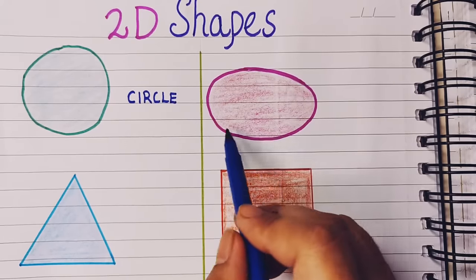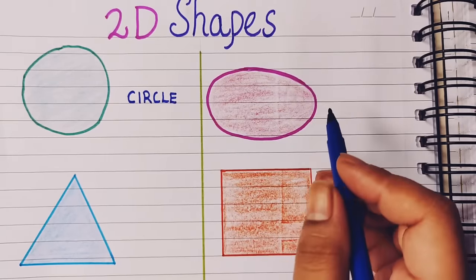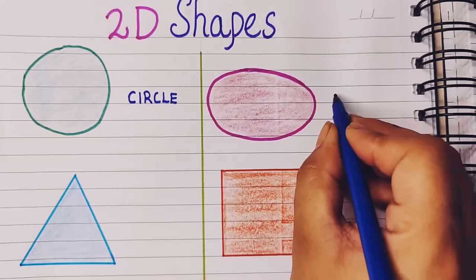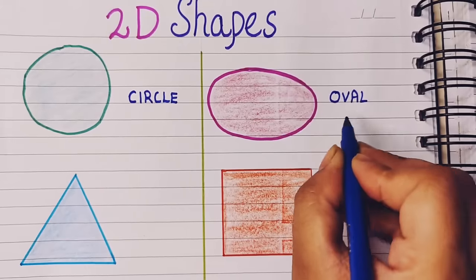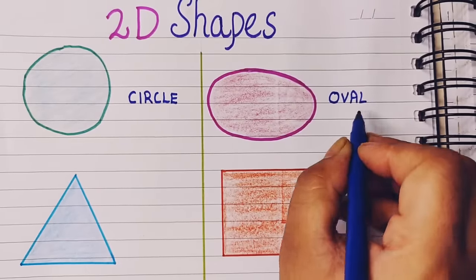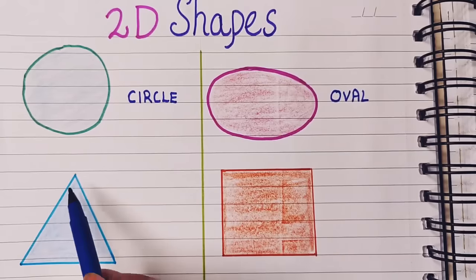The next shape is a bit elongated. It is oval shape. Oval: O-V-A-L, oval.